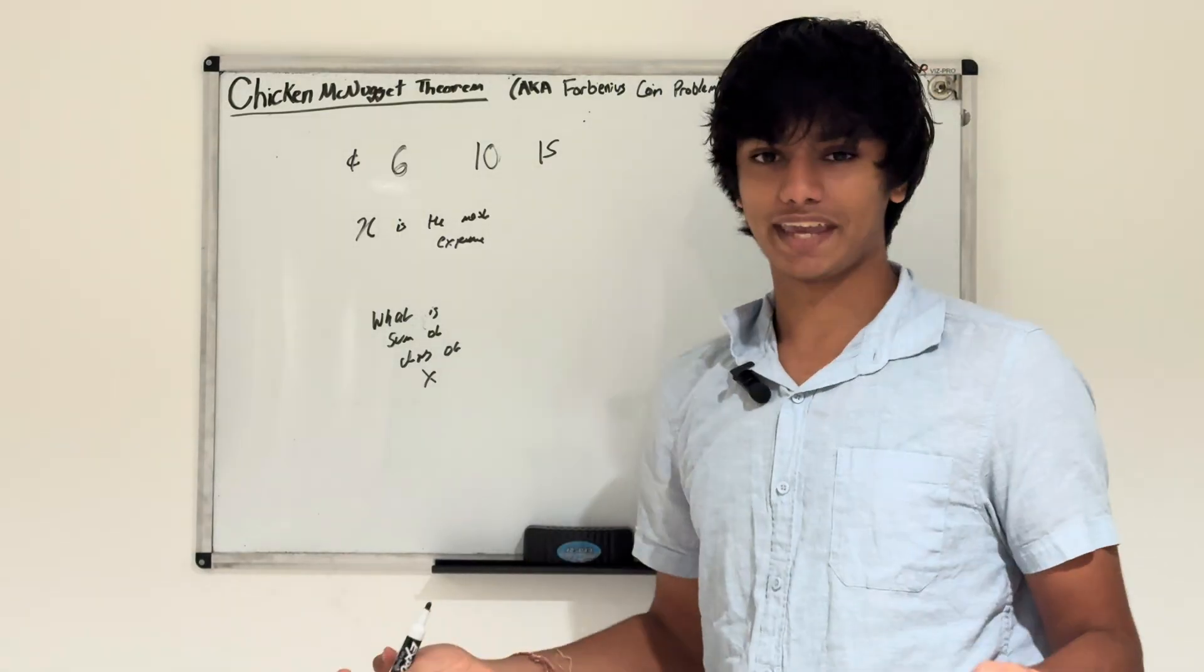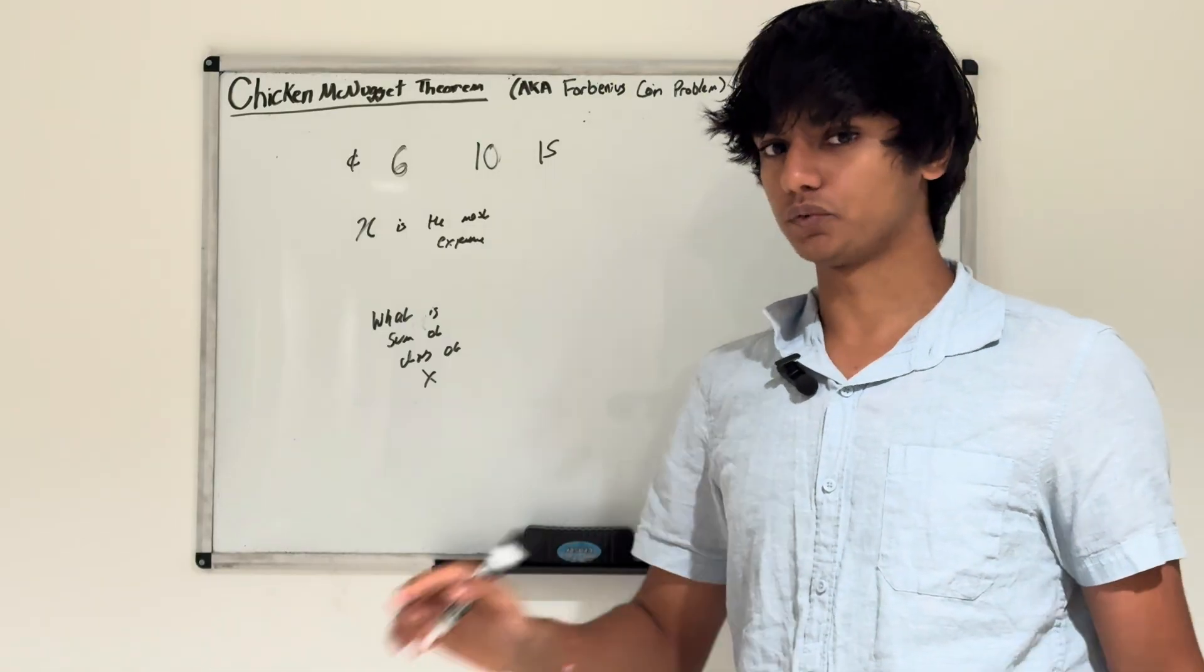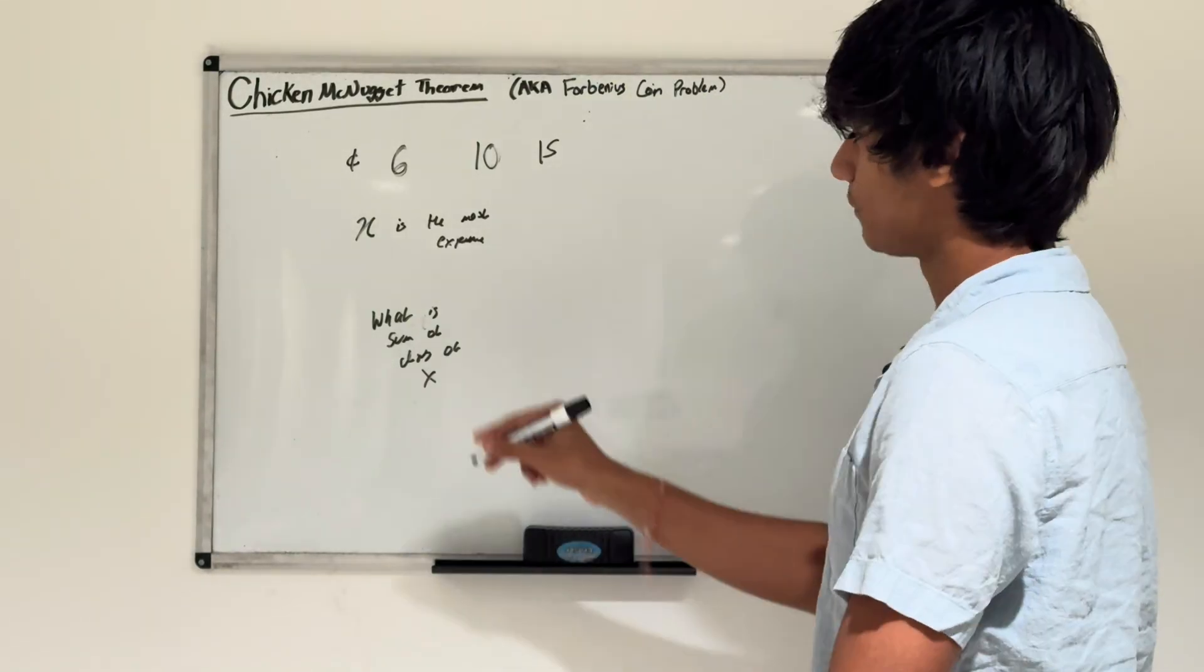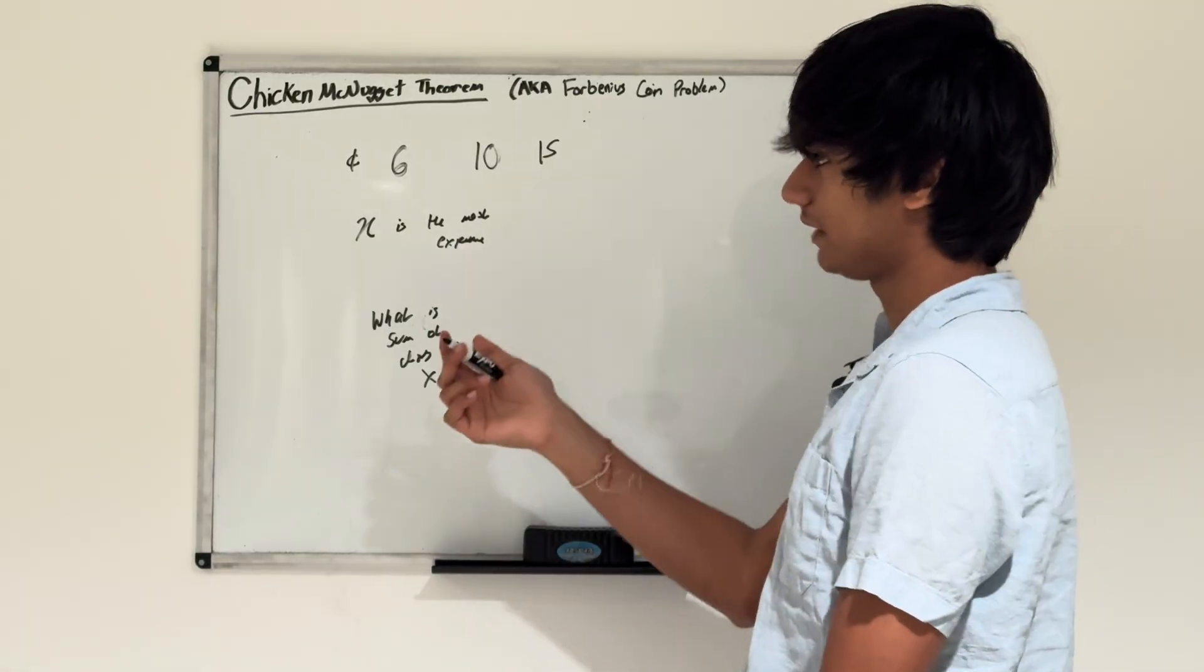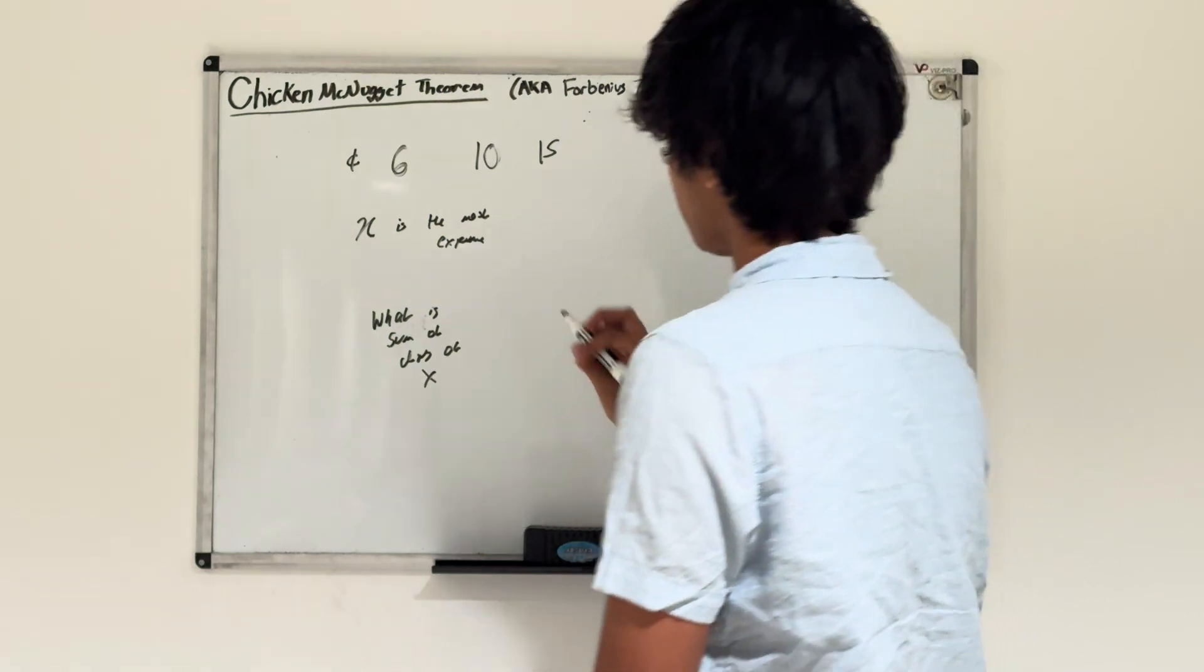At first, you might be thinking we can't solve this problem because we have three numbers and the Chicken McNugget Theorem only deals with two numbers. You're right, but there is something we can do in this case that makes it easier than just trying to guess each number.